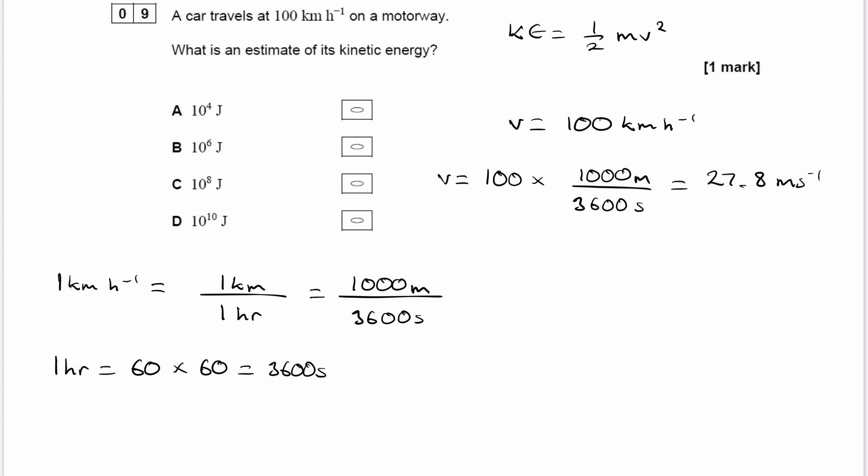Okay, so then what is the mass of a car? So we have to estimate the mass of a car. A typical car tends to be between 1,000 to 2,000 kilograms. So let's just use an average value of 1,500 kilograms.